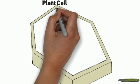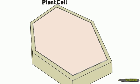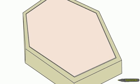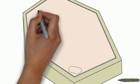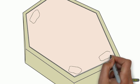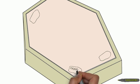Inside the cell wall is the cell membrane. Just like in an animal cell, the cell membrane controls what enters and leaves the cell. Inside the cell membrane is the cytoplasm, which holds all of the other organelles.